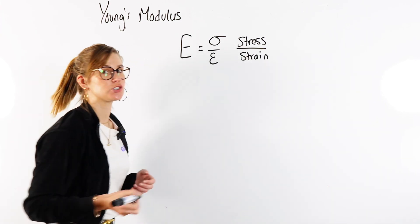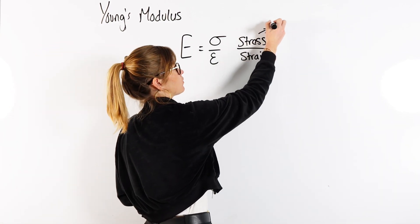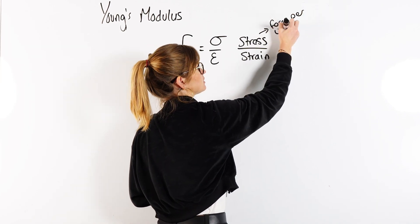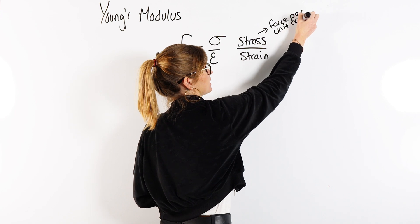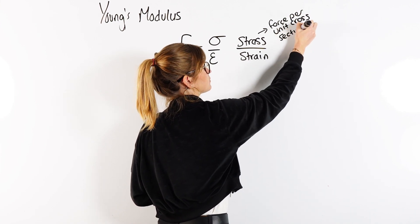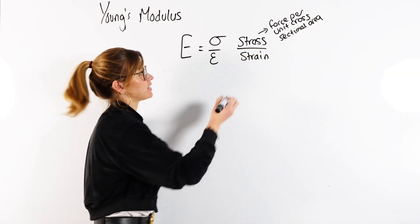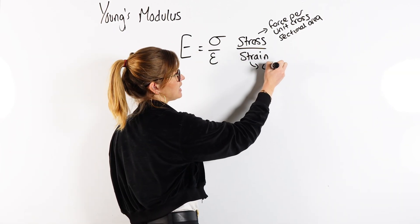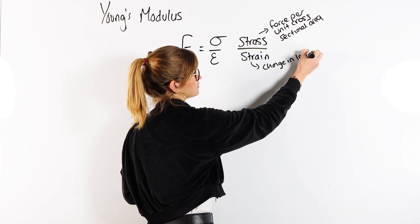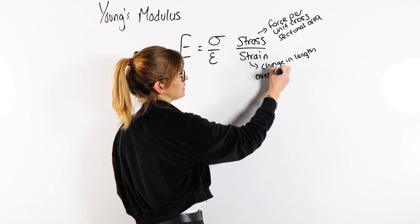Stress, or sometimes we call it tensile stress, always stands for the force per unit cross-sectional area. And what strain stands for is always going to be the change in length over the original length.